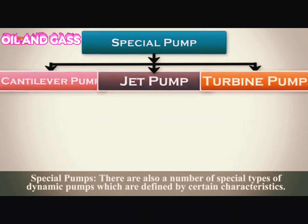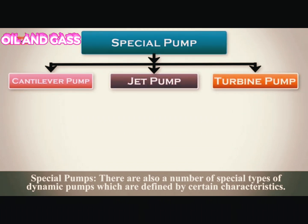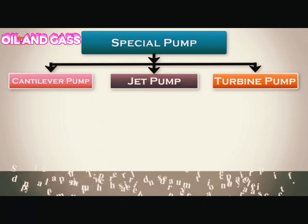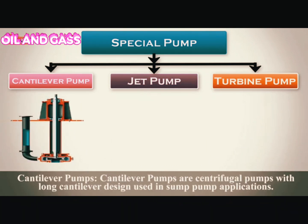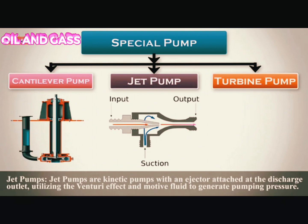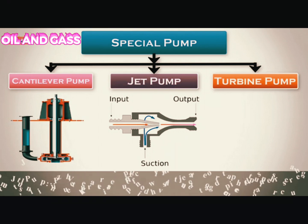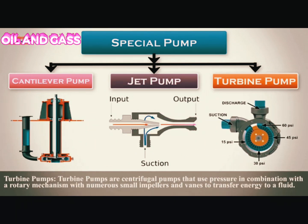Special types of dynamic pumps are defined by certain characteristics. Cantilever pumps are centrifugal pumps with a long cantilever design used in some pump applications. Jet pumps are kinetic pumps with an ejector attached at the discharge outlet, utilizing the venturi effect and motive fluid to generate pumping pressure. Turbine pumps are centrifugal pumps that use pressure in combination with a rotary mechanism with numerous small impellers and vanes to transfer energy to fluid.